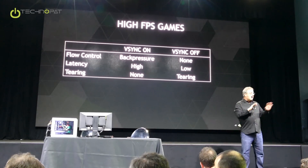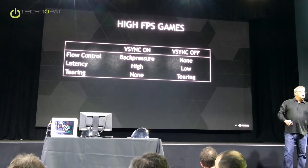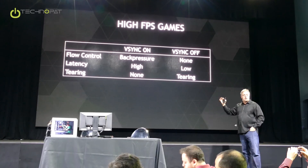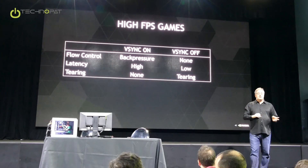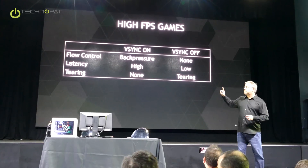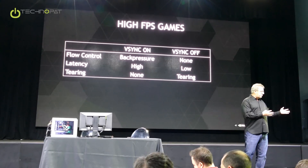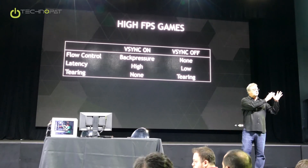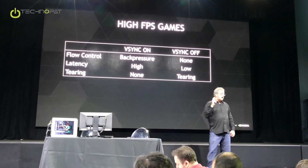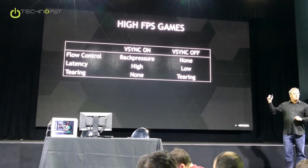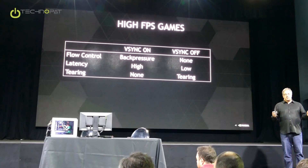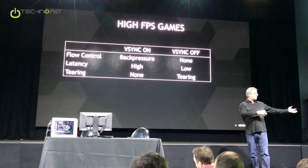When you turn vSync off, you're saying I don't care about monitor synchronization — bring it as fast as you possibly can, so the thing renders at 400 frames per second. The problem with vSync on is all that back pressure causes latency — sometimes as high as 100 milliseconds in that pipeline. When you turn vSync off, you get very, very low latency because there's no back pressure. As you move your mouse, that frame gets generated and moves through the pipe very quickly and shows on screen as soon as possible. The vast majority of competitive gamers are playing with vSync off, but it's a crappy experience because vSync off tears, and especially at high frame rates playing eSports, it's just a jittery mess.